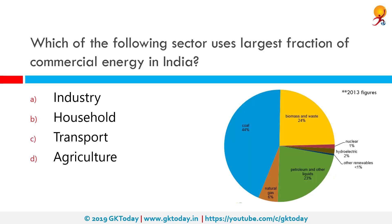Which of the following sectors uses the largest fraction of commercial energy in India? That would be the industry sector. India's installed power generating capacity was 334.4 gigawatts as of January 2018, the world's fifth largest. Over the last five years India added 99.21 gigawatts of capacity, of which 91.73 gigawatts came from thermal sources, 5.48 from hydro, and 2 gigawatts from nuclear sources.